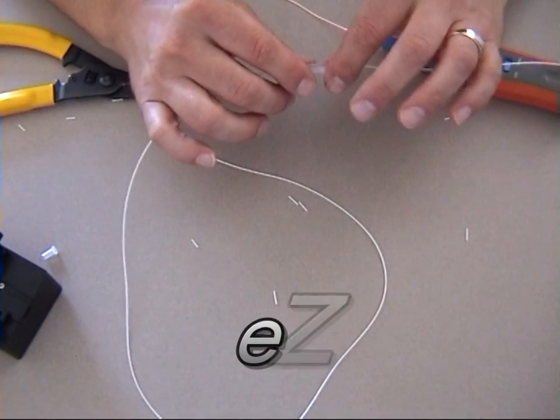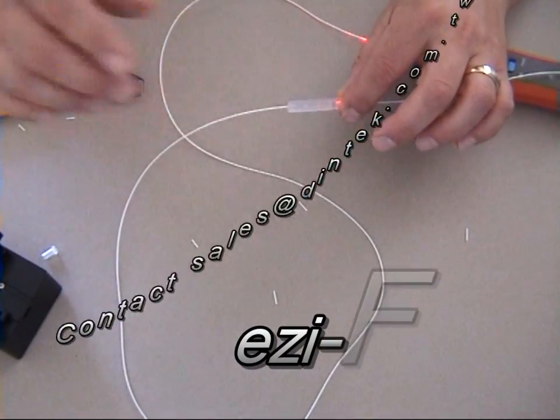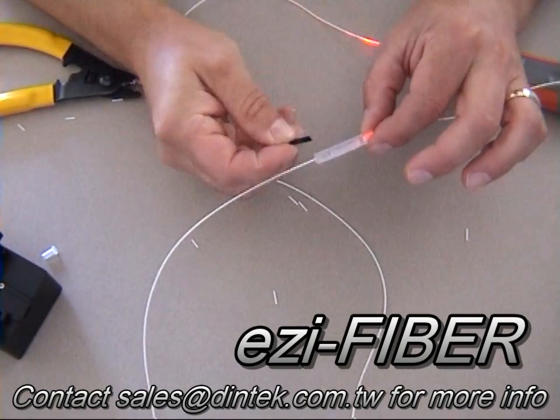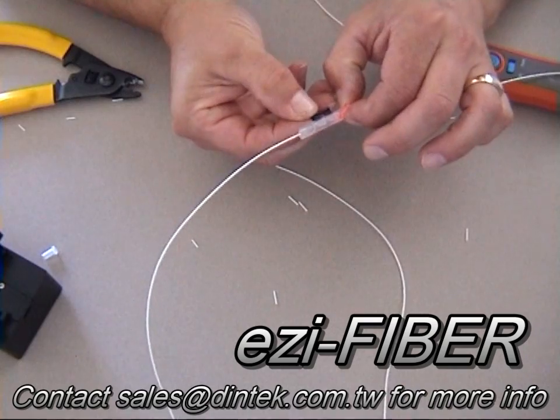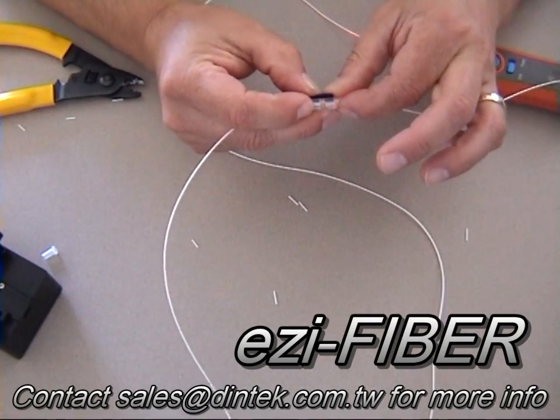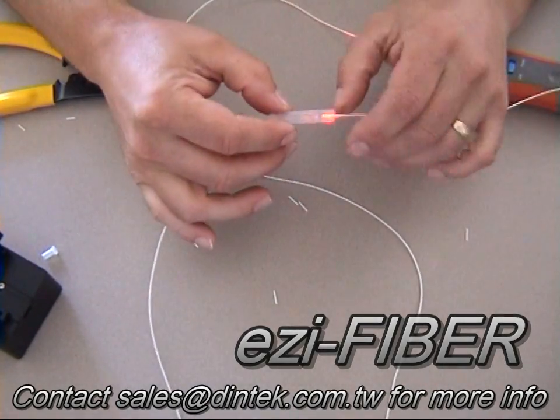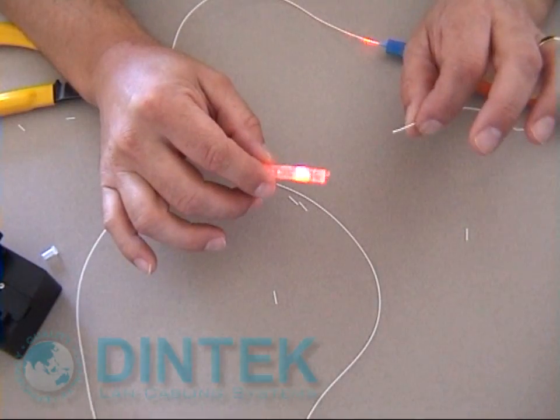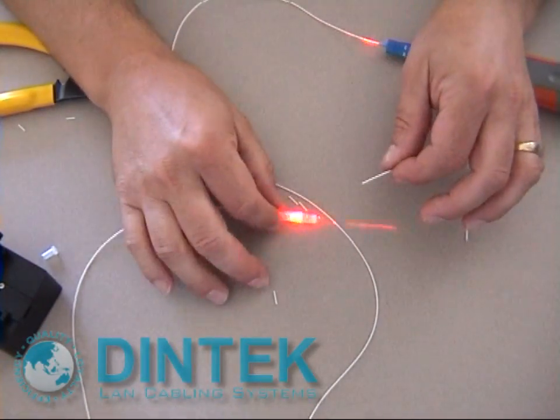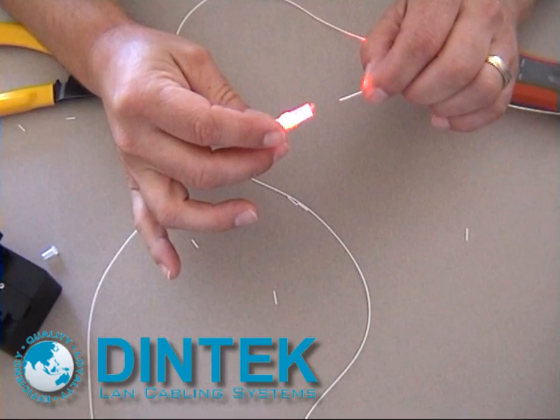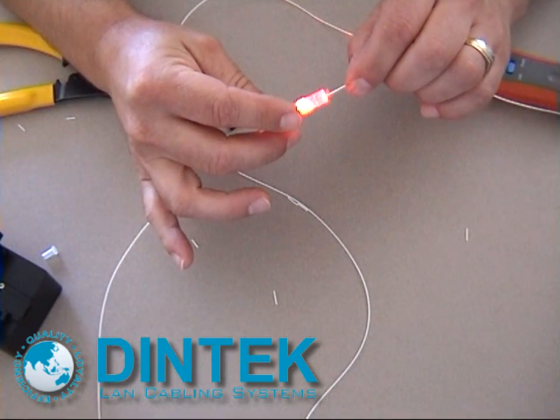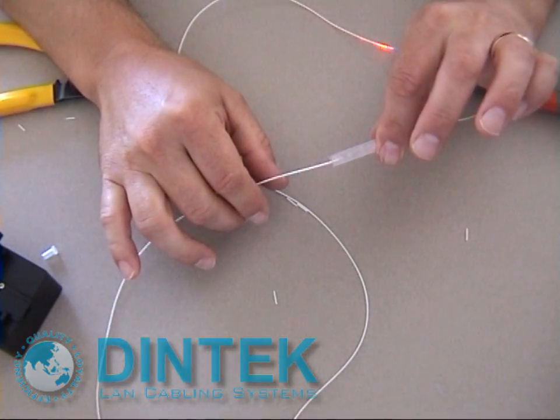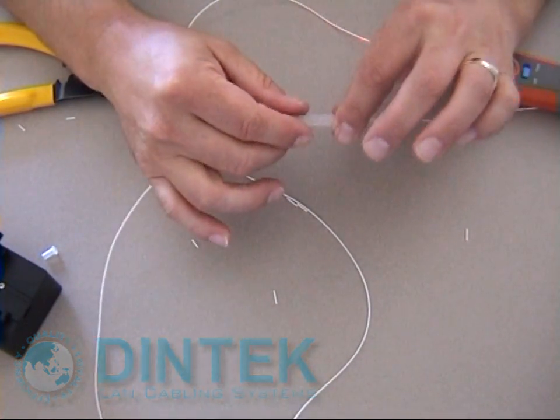Now, if we're not quite happy with the splice that we've done, it's quite easy to reuse these. We just get something called our removal tool here. And this actually pushes the pins back out again. Once those pins are out, all you have to do is undo the locking tab on the side and you can re-strip your fiber, re-insert it again, and push it down. And there you have it.